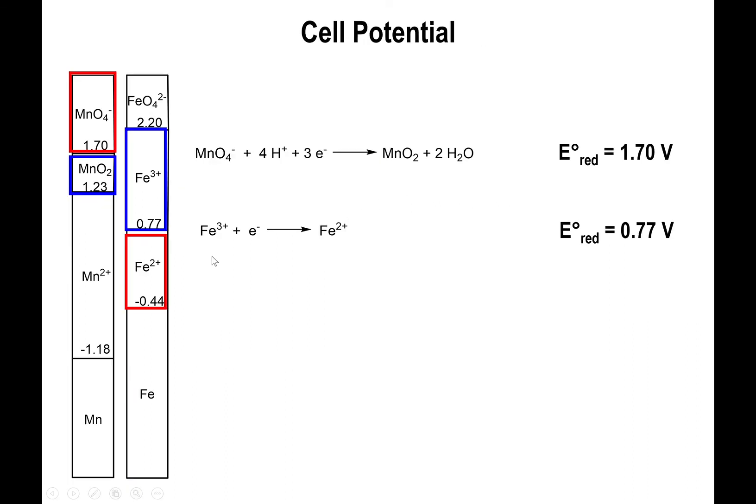What that means is that we're not actually dealing with iron 3+ going to iron 2+, we're doing the opposite. And so we need to reverse the equation right here. And also, we need to balance the number of electrons. Notice that for the permanganate reaction, we have three electrons being used. For the iron reaction, there's only one electron. So we need to multiply that entire equation by three.